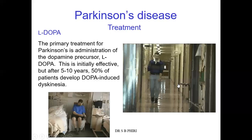There is also fetal midbrain cell transplant into the caudate and putamen. These fetal midbrain cells are able to synthesize and release dopamine. If you transplant them into the caudate and the putamen — the corpus striatum — they can synthesize and release dopamine because these neurons express an enzyme called tyrosine hydroxylase, which is key in the production of dopamine.